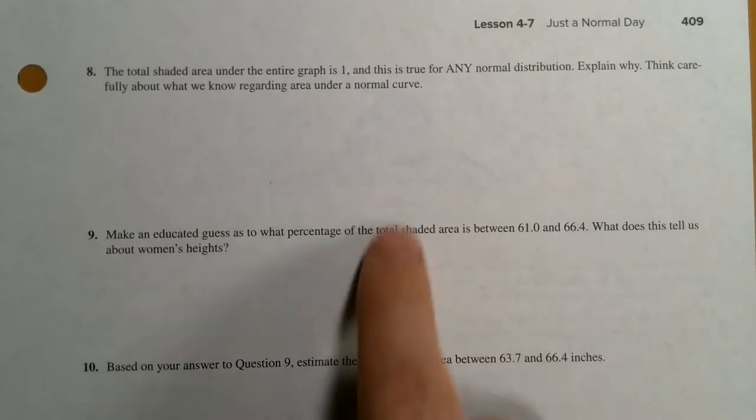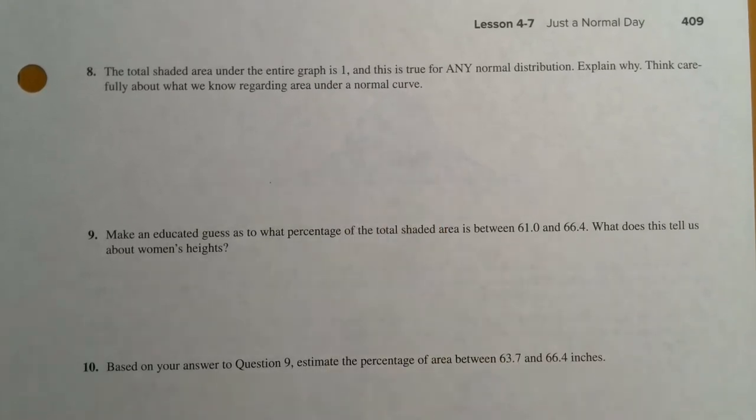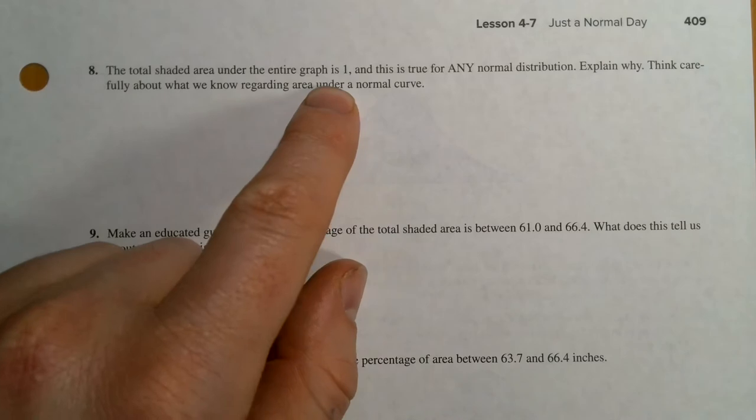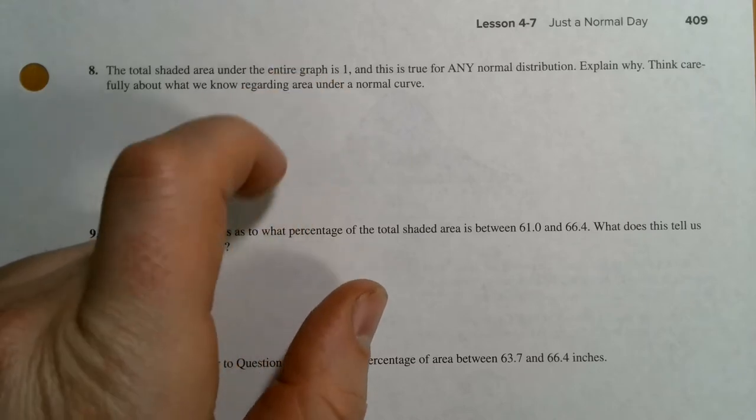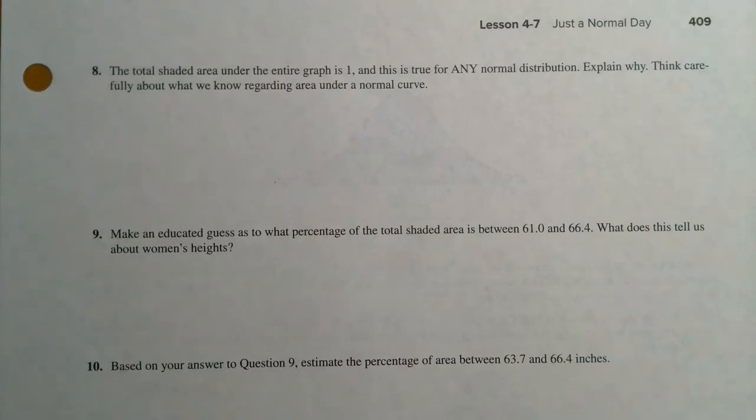I'm going to let you work your way through these problems, because he's asking you to make some educated guesses, and then he's going to introduce you to the empirical rule. But first let me note that the entire area under the graph is 1. That's because the area under a curve represents a probability, and when we work with a probability distribution, the sum of all the probabilities has to be 1.